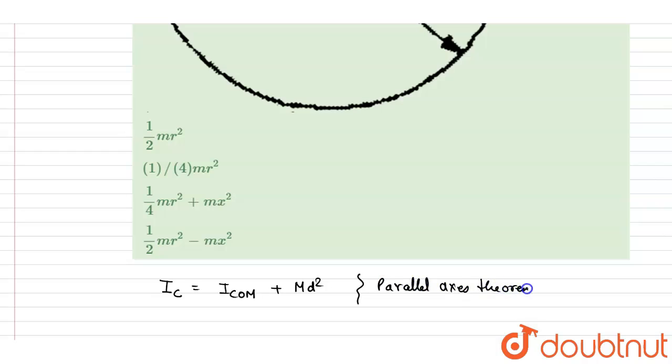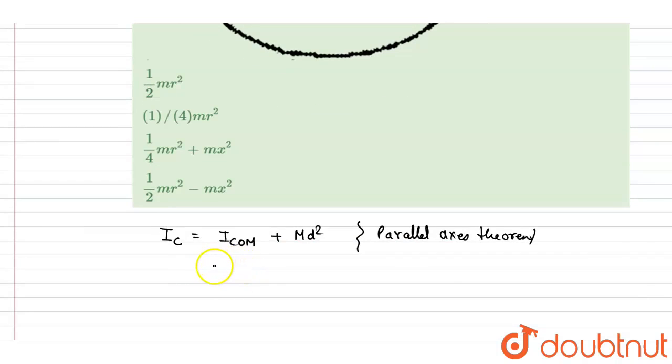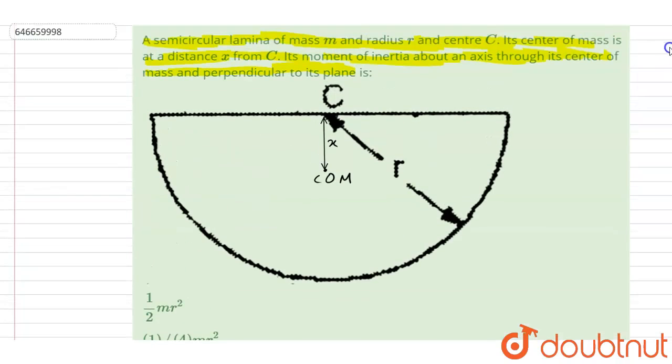Now if you see here, the distance is already given in the question, it is x. And let us see the moment of inertia about an axis passing through point C, right? So if you see, this is a semicircular disc.